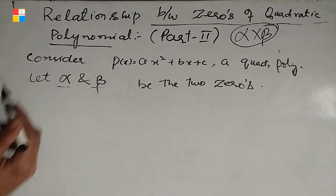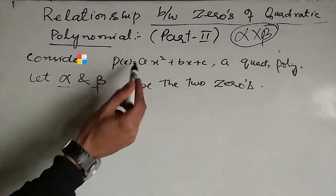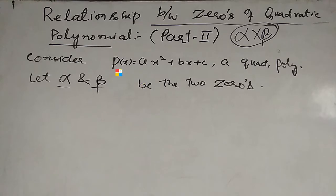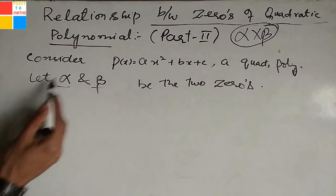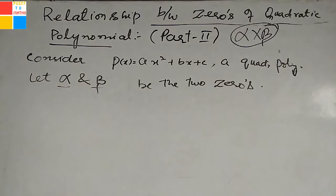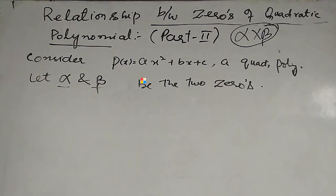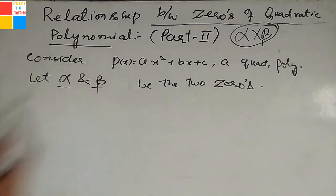For this purpose, consider the quadratic polynomial p(x) equal to ax squared plus bx plus c, where a, b and c are real numbers. Consider two zeros of this quadratic polynomial, that is alpha and beta. Let us assume alpha and beta are the two zeros of this quadratic polynomial.